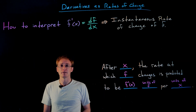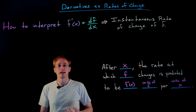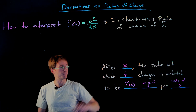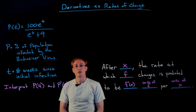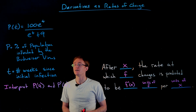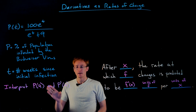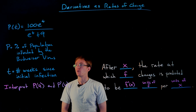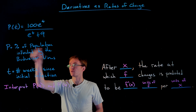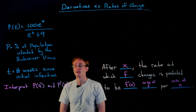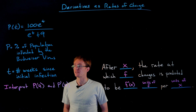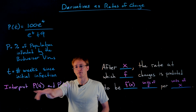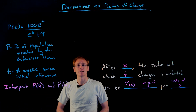This general statement can be hard to use, so let's look at a specific example. We're given the function p of t and asked to interpret the value of our function at t = 4 and the value of the derivative at t = 4. Our function describes the percent of the population infected by the Budweiser virus, and t represents the number of weeks since the initial infection.